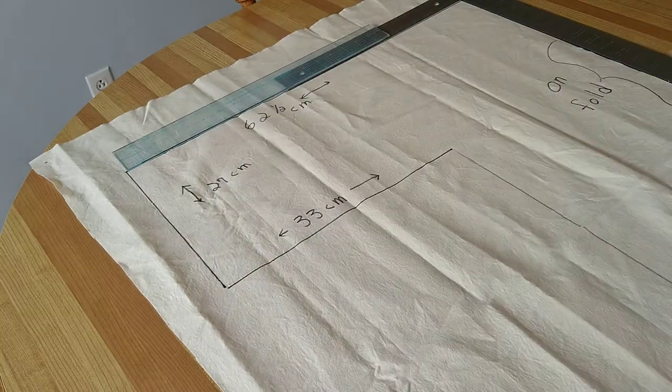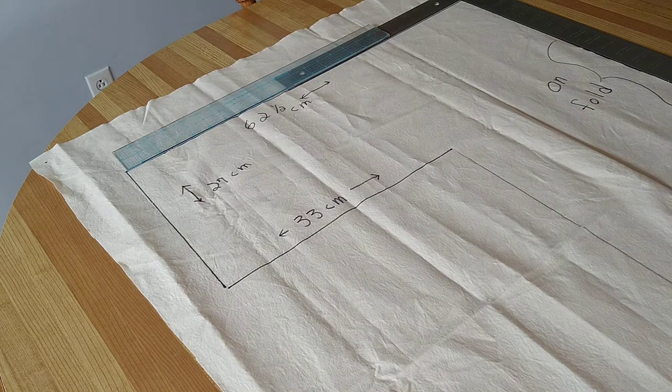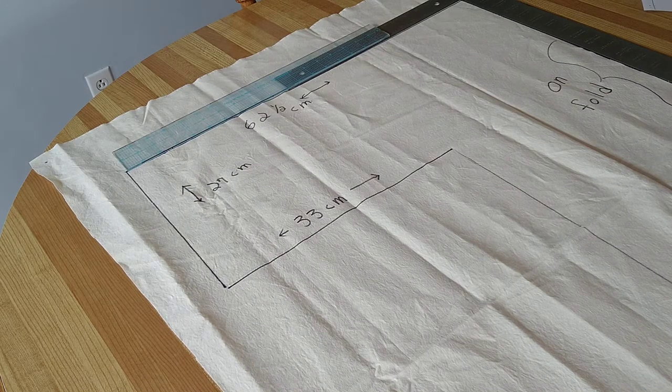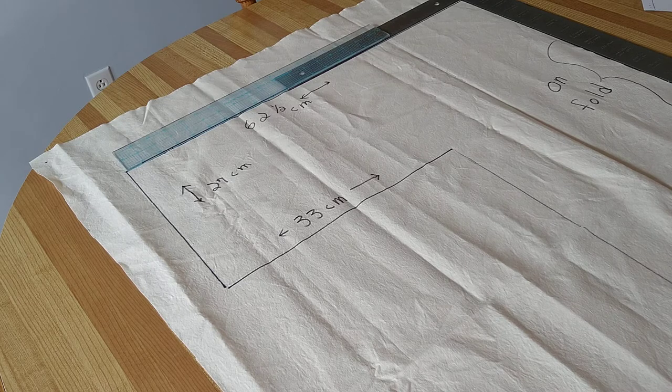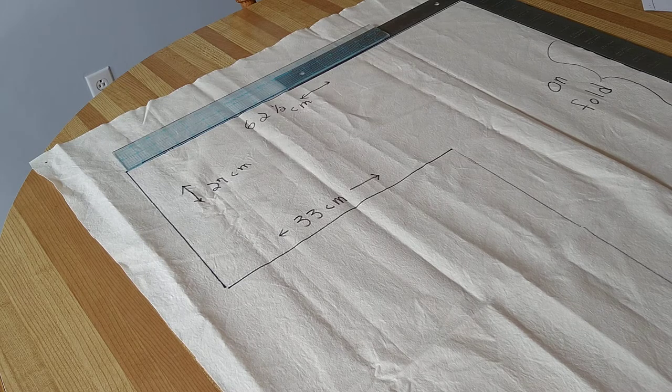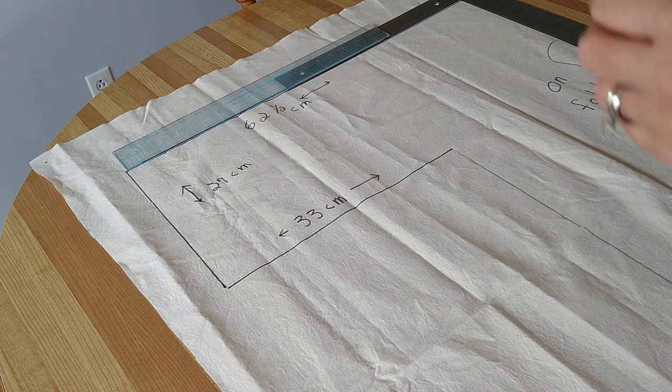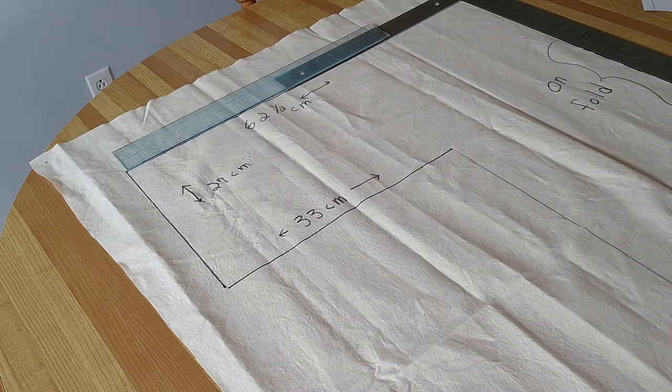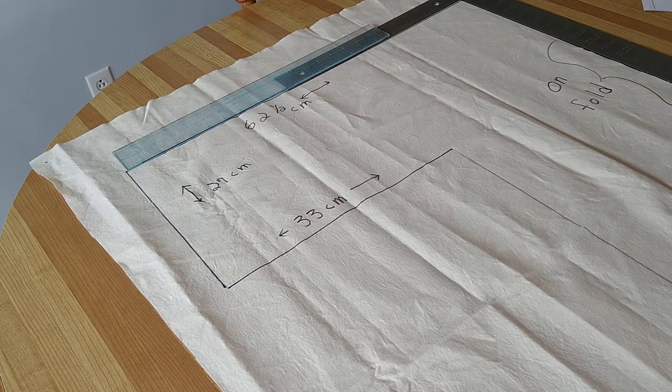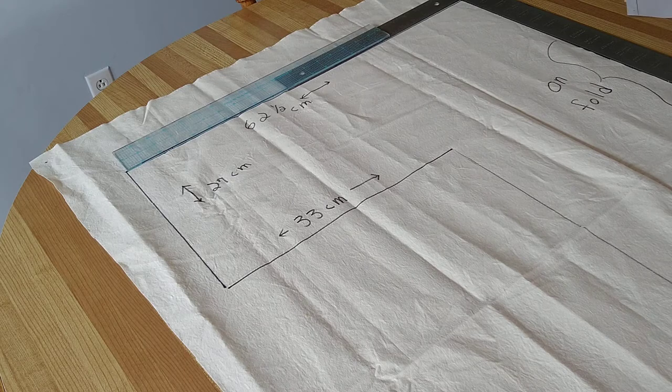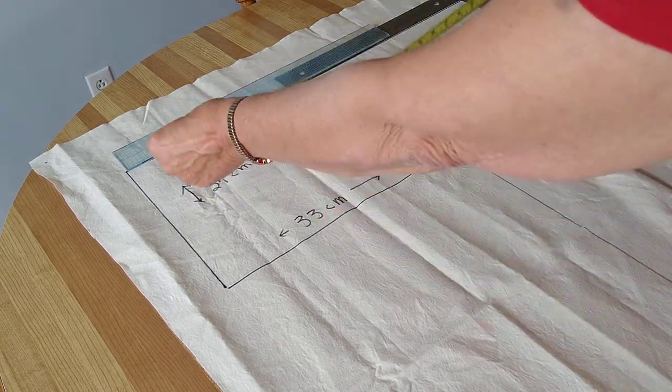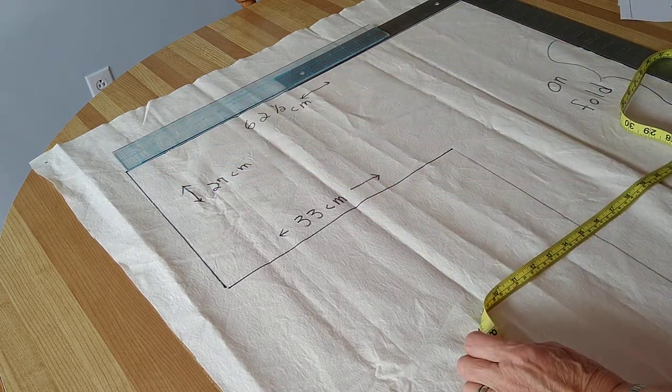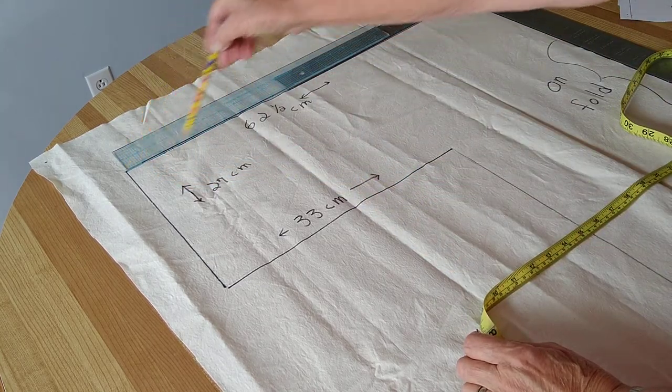Okay so we're going to take the fabric and fold it in half. We're going to run the t-square along the side of the fold and we're going to use another extended ruler and we need to make that top line 62 and a half centimeters. Double check it with your tape, 62 and a half centimeters across the top.